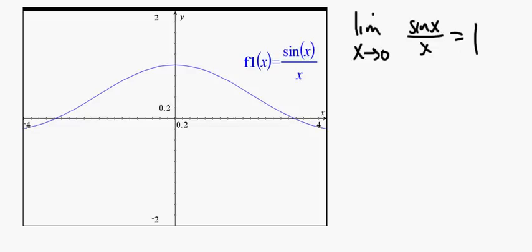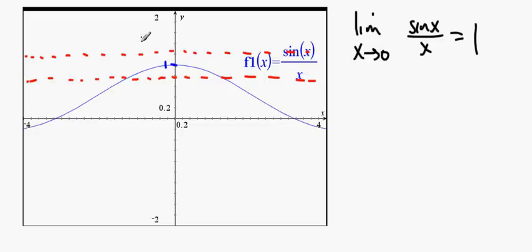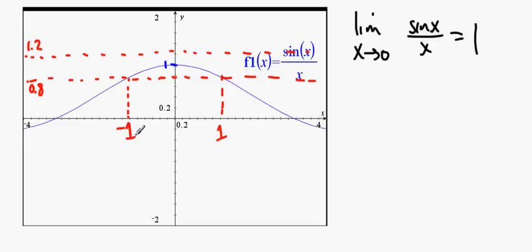Here's what we do. We imagine that the limit is in fact 1 and put a band around 1. Let's say I'm okay being away from that 1 by 0.2 — 0.2 on either side. So that's 1.2 and 0.8. If I want to get within 0.2 of the limit, is there an interval of x values around 0 that does the job? It turns out there is. If I stay between negative 1 and positive 1, then my function will always be inside the red band.